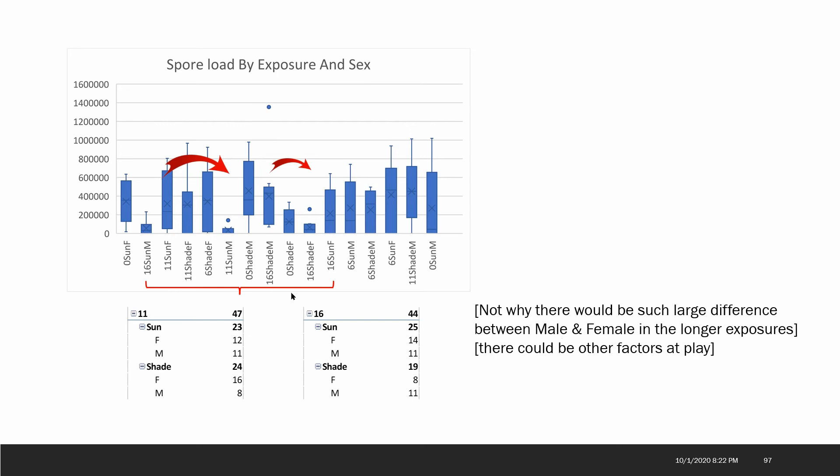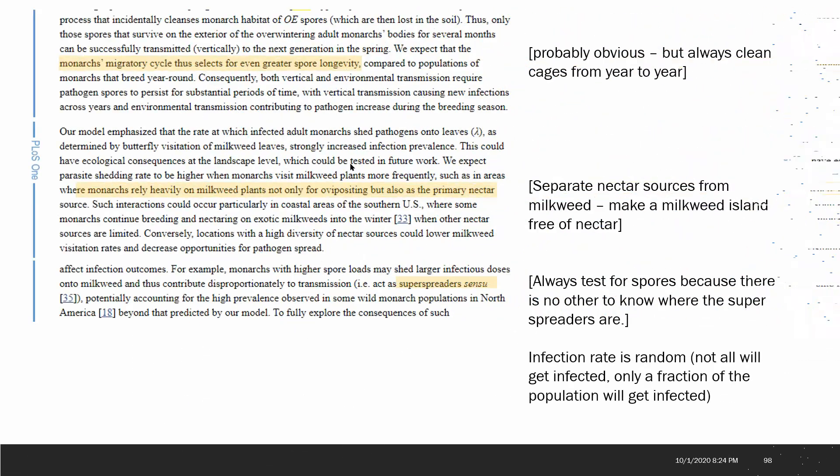Here there's an interesting statement that we expect that the monarch's migratory cycle selects for even greater spore longevity. So it makes sense that those monarchs that do migrate would have spores that can survive for a longer time in the environment as opposed to the ones that don't really migrate. For those of us who are dealing with the migratory butterflies, we always knew this that if you don't clean your cages from year to year you're going to have a problem with OE.